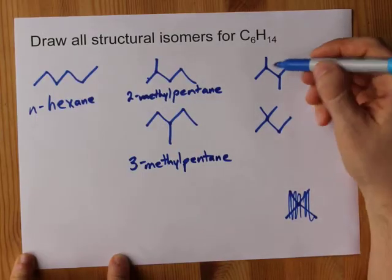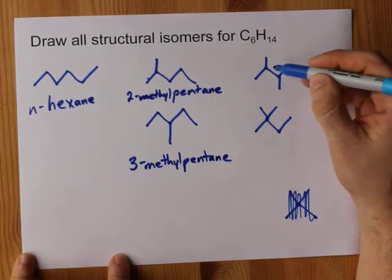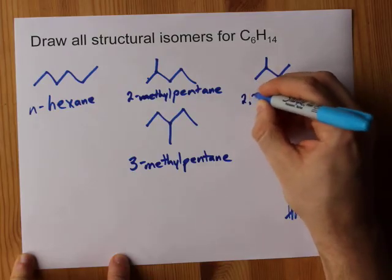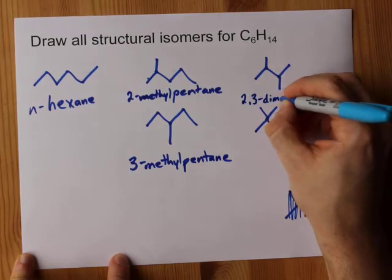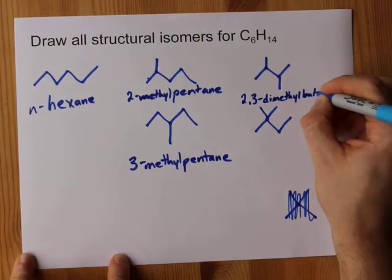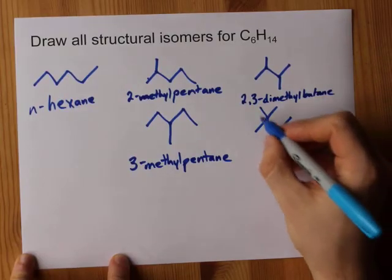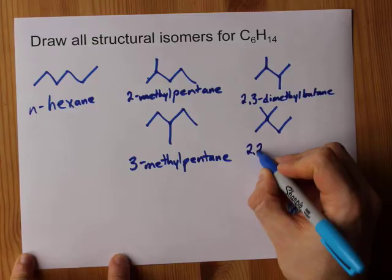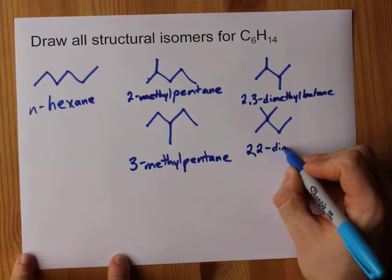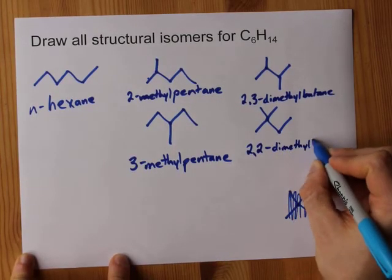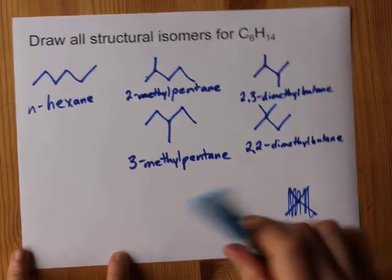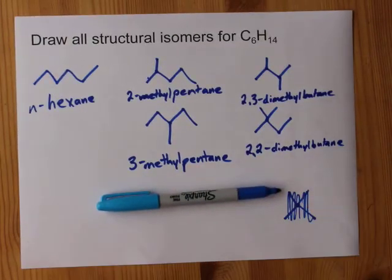Now I have a butane, but I have two methyl groups — one is on carbon two and one is on carbon three. This is 2,3-dimethylbutane. And this one has both of those methyl groups on the same carbon, so it's 2,2-dimethylbutane. That's five structural isomers for C6H14.